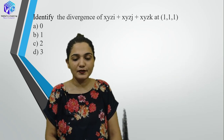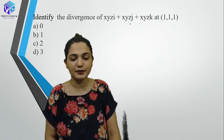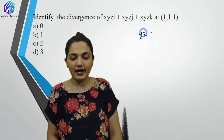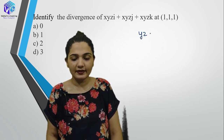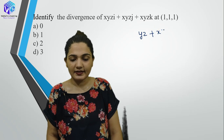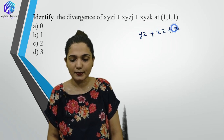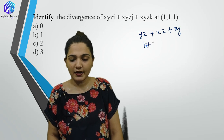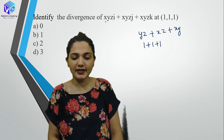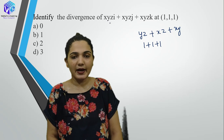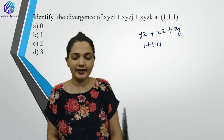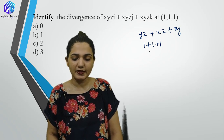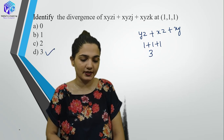Identify the divergence of xyz·i-cap + xyz·j-cap + xyz·k-cap at point (1,1,1). Divergence = del(xyz)/del(x) + del(xyz)/del(y) + del(xyz)/del(z) = yz + xz + xy. Putting point (1,1,1): 1+1+1 = 3. The answer is 3.